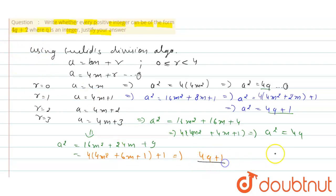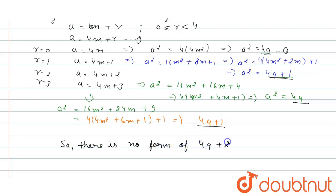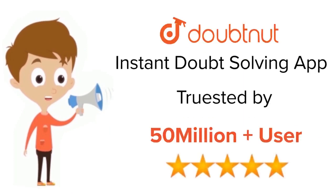So what we get is: 4q, 4q plus 1, 4q, and 4q plus 1 — for the four cases respectively. Therefore, the square of any integer can only be of the form 4q or 4q plus 1. There is no form of 4q plus 2. I hope you understood. Thank you.